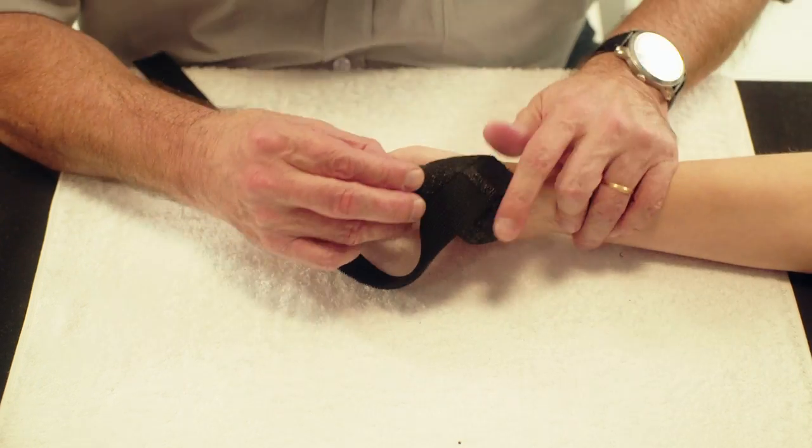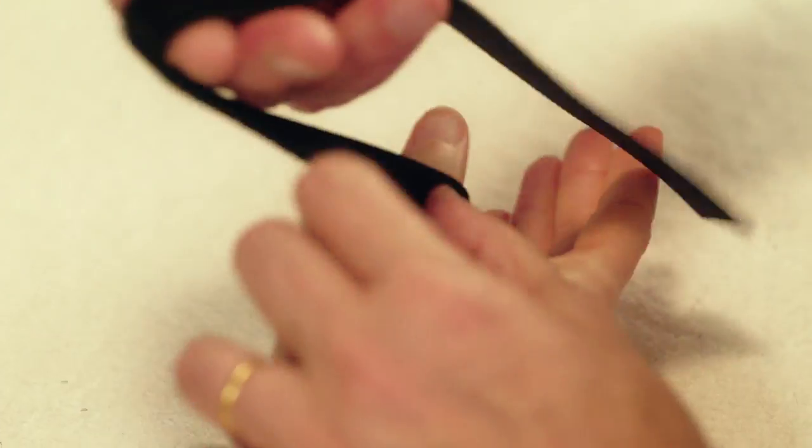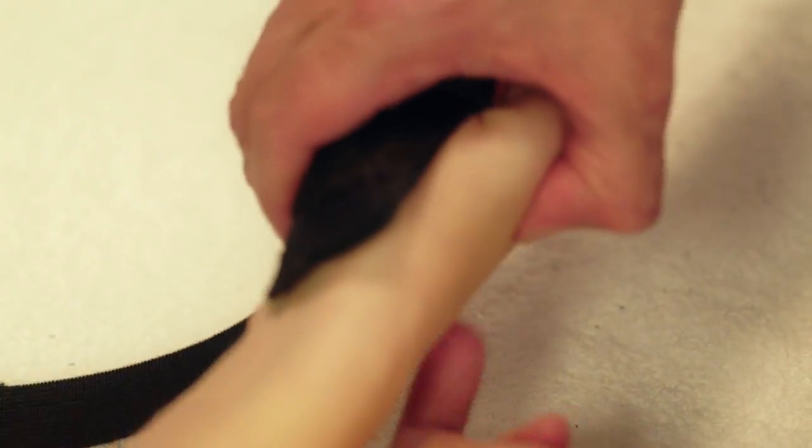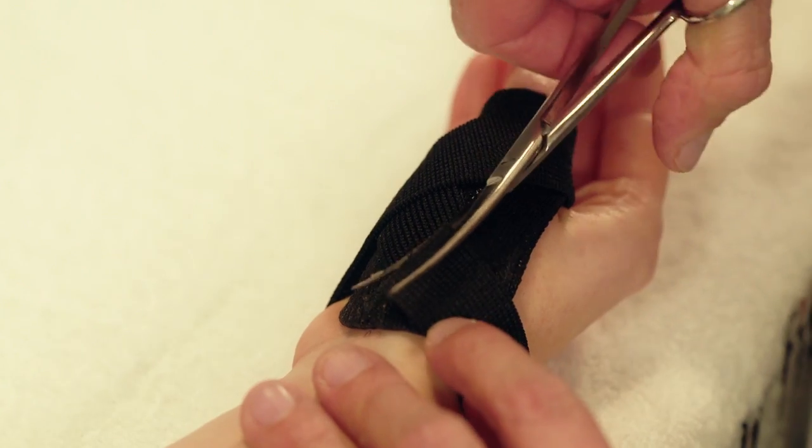Fit the orthosis onto the patient's thumb. Cut away any excess Velcro strap and round the corners.